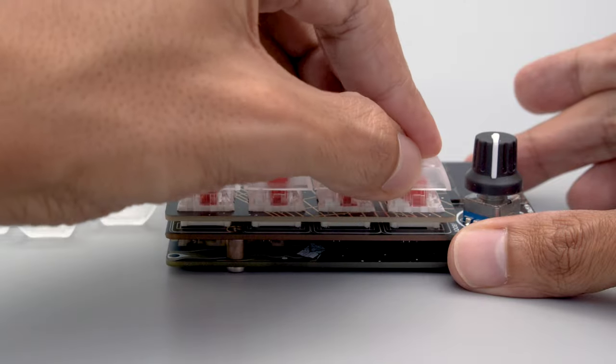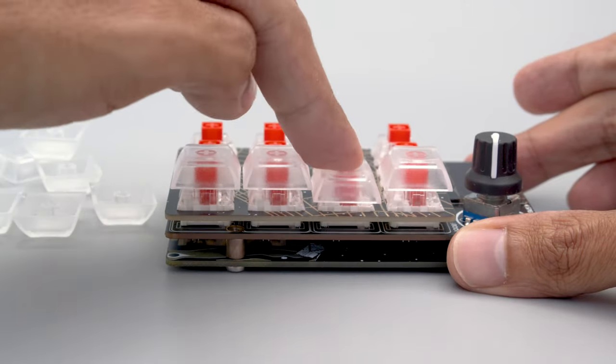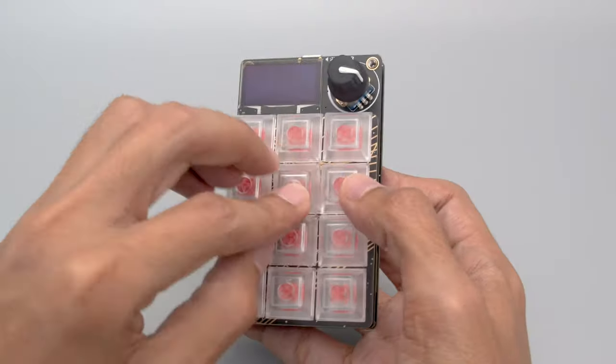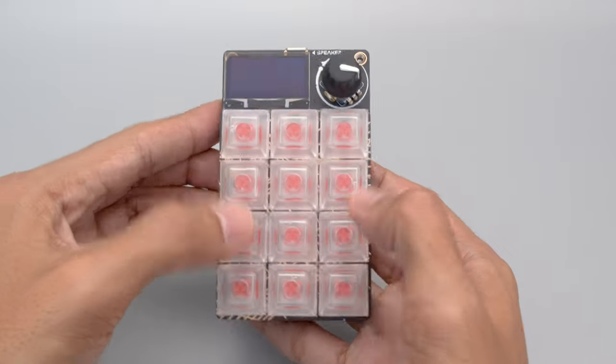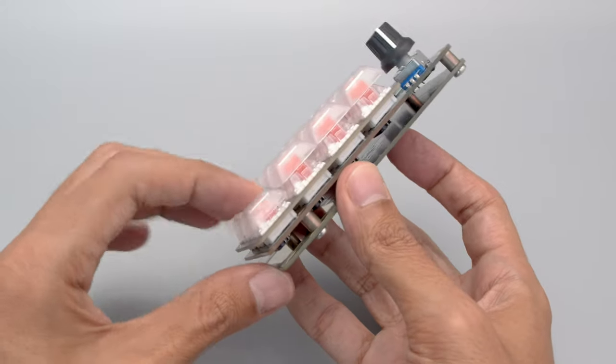The keycaps are easily installed by press-fitting them onto the stem of the key switches. If you'd like to customize your MacroPad, you can use a keycap puller to swap out the switches and keycaps.